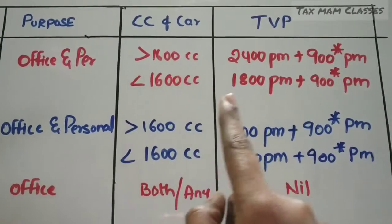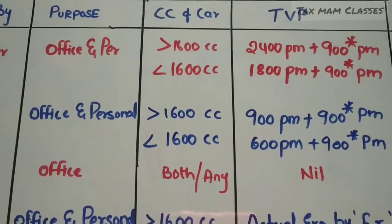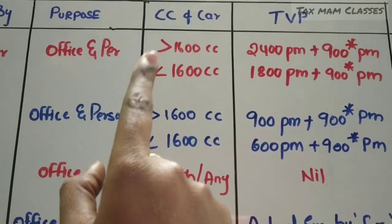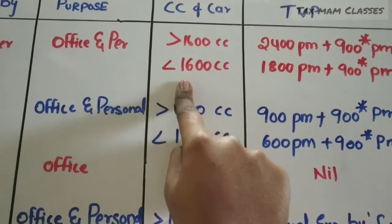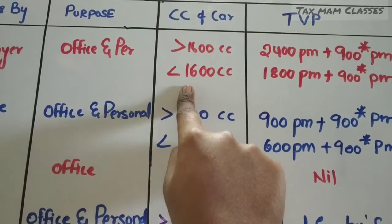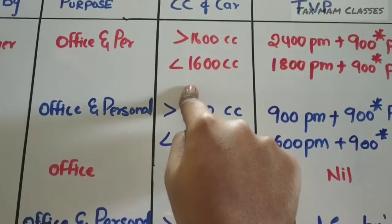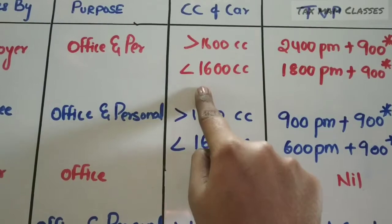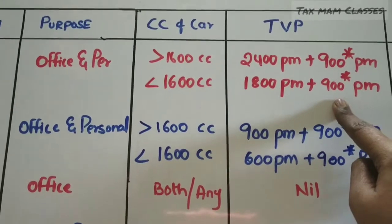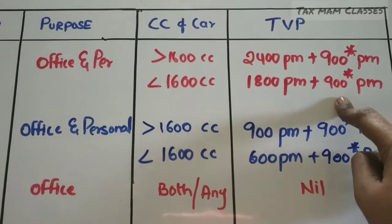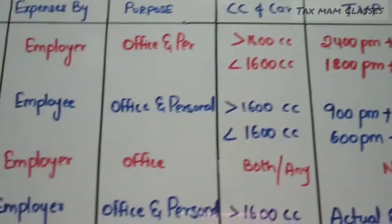A car with more than 1600 CC is called a 'big car' for exam purposes, while less than 1600 CC is called a 'small car.' If the car engine is less than 1600 CC, the taxable value is ₹1,800 per month plus ₹900 per month — the ₹900 is added only when a driver is employed. If no driver is employed, the taxable value is ₹1,800 per month only.